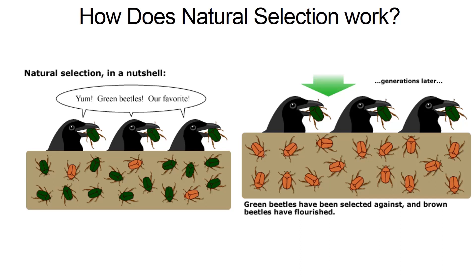Darwin's theory of evolution by natural selection was one of the greatest theories of all time. It explained how species change over time. So basically, how does it work?